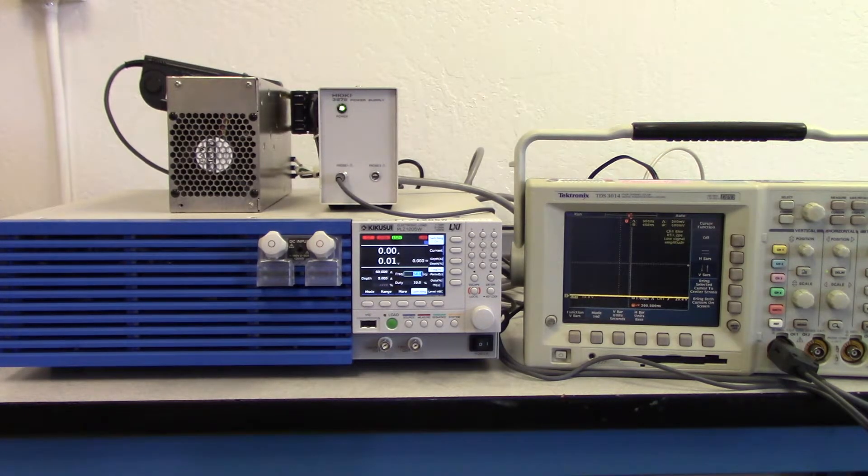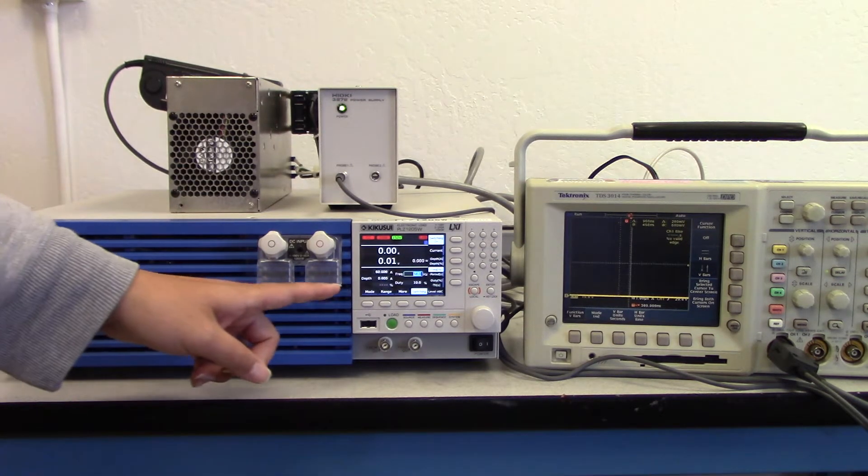This is a 1200 watt DC electronic load with a range of 1 volt to 150 volts and up to 240 amps. Right now we have it set to sink 60 amps from this DC power supply at about 14 volts.